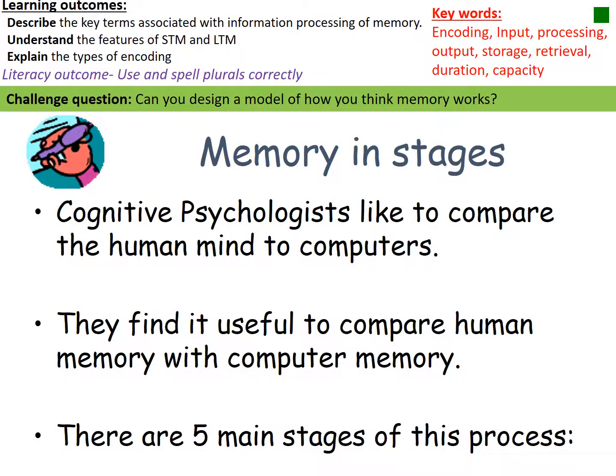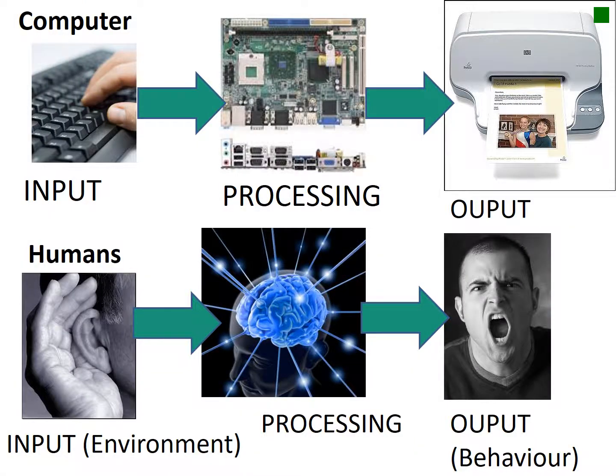Cognitive psychologists think human memory works very similarly to computer memory. A computer inputs information from a keyboard or memory stick. The encoding process is when that information is put into a recognizable format — for example, transferred into binary code or saved into a Word document. The storage stage is when you click save, saving that document.